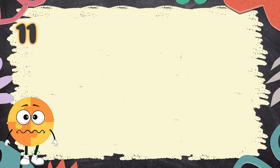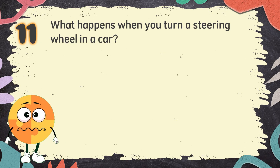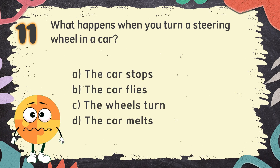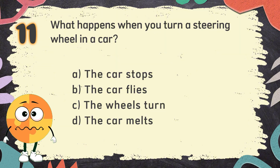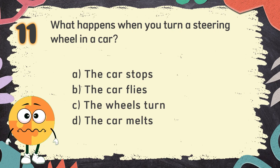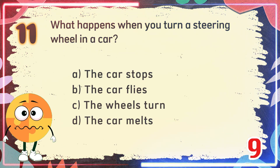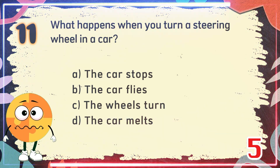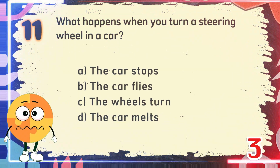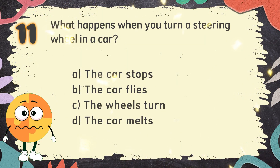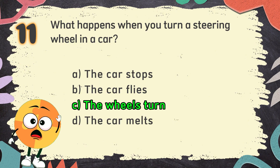Number 11. What happens when you turn a steering wheel in a car? The choices are: A. The car stops. B. The car flies. C. The wheels turn. D. The car melts. The correct answer is C. The wheels turn.